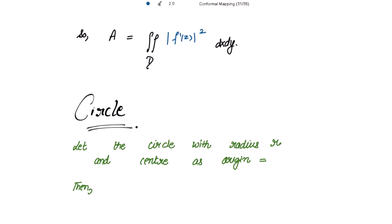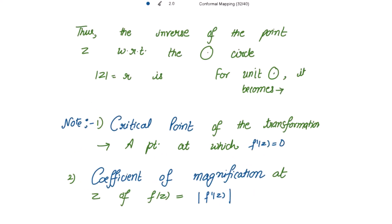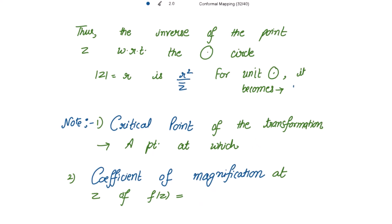A simple note about circles: let the circle with radius r and center at the origin be |z| = r. Squaring both sides gives |z|² = r², and since |z|² = z · z̄, we get z · z̄ = r². Replacing z with its inverse point z' while keeping z̄ unchanged, we find the inverse point of z with respect to the circle |z| = r is r²/z̄. For the unit circle, this becomes 1/z̄.